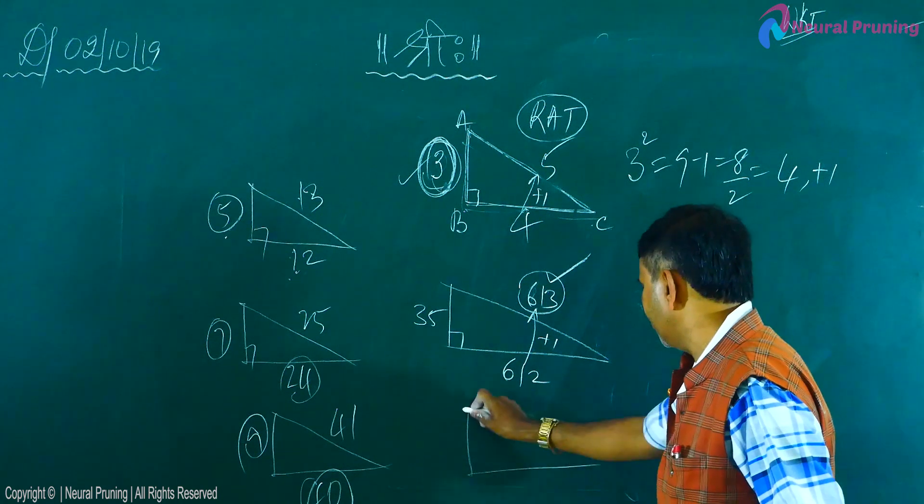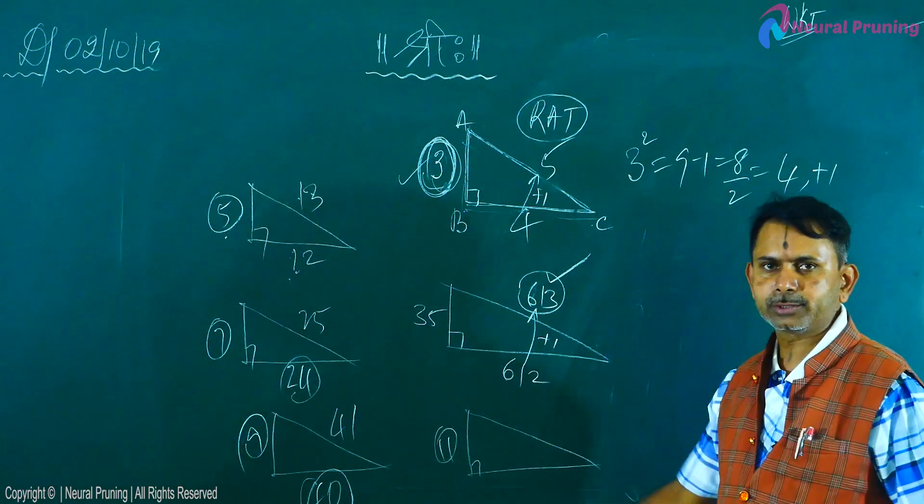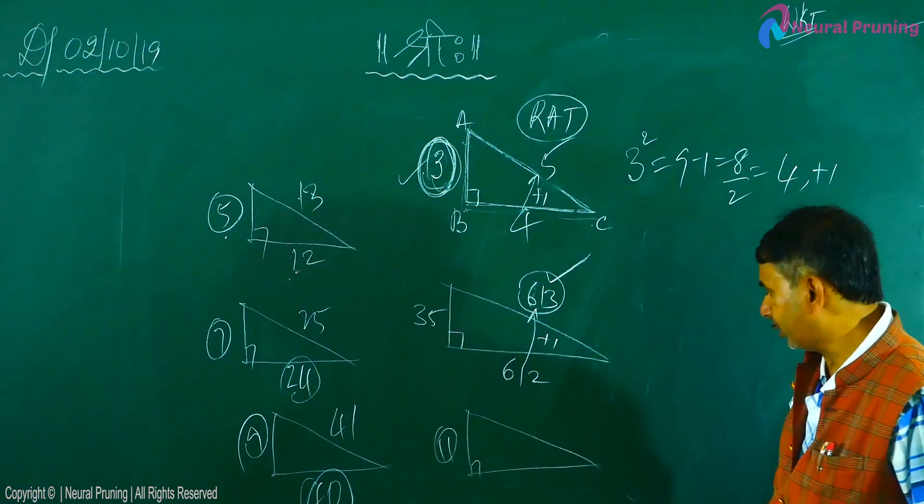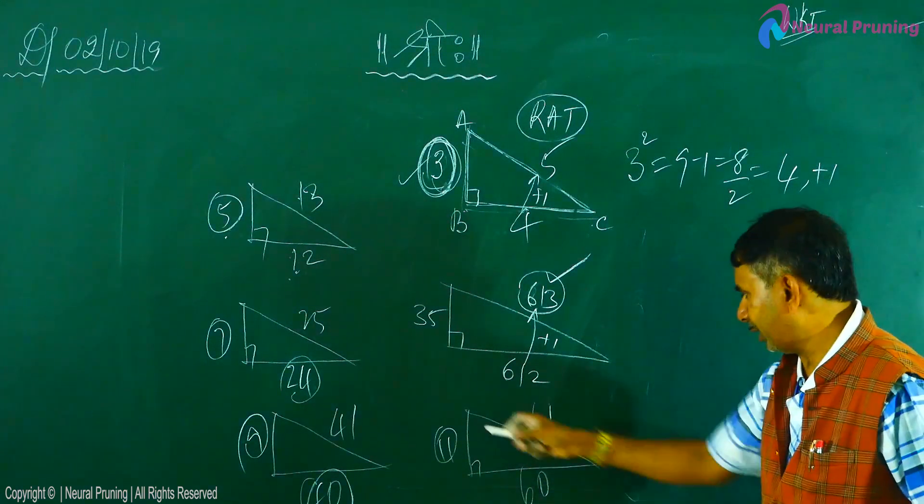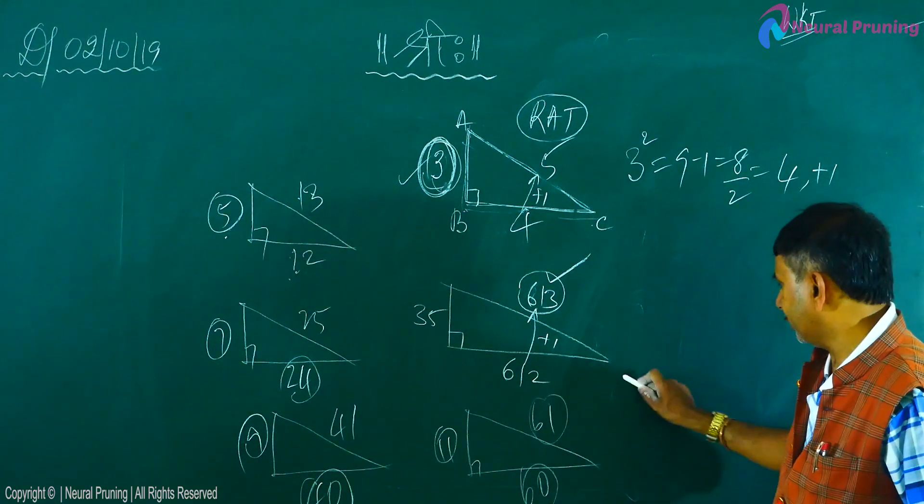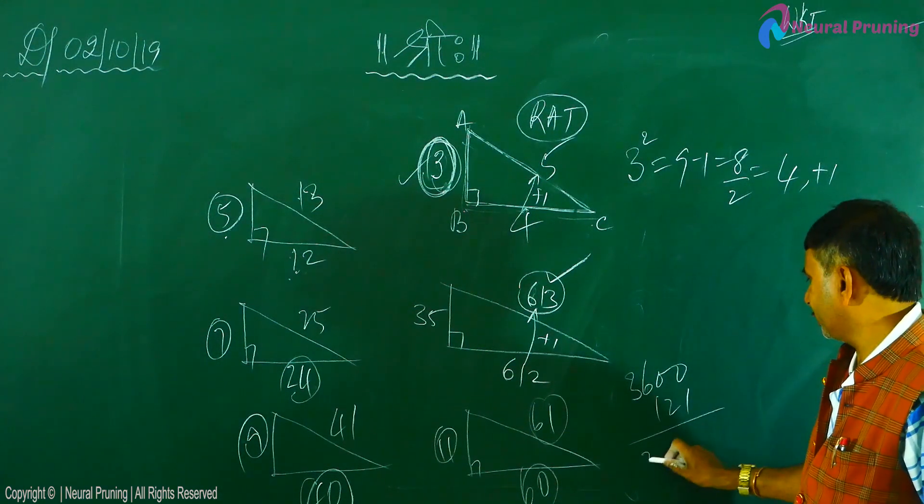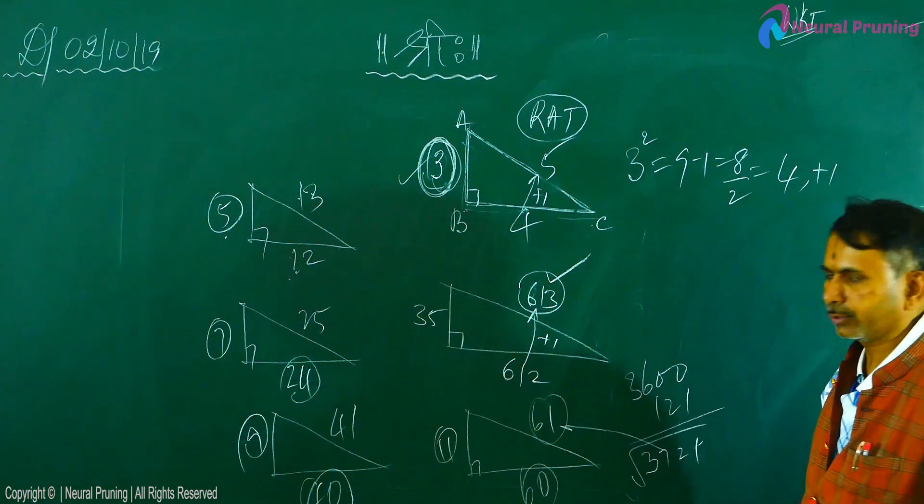Double digit, apply. Come on, tell me. 11. Odd number or even number? Odd number. Square, how much? 121. 121 minus 1, how much? 120, by 2, 60. Next number is 61. You can cross-check. This 60 square is what? 3600. 11 square is 121. It will become 3721. If you take square root, it will become 61. You can check.